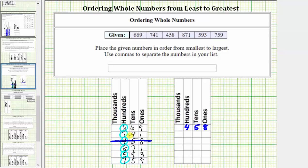Now we'll find the smallest remaining value by comparing the values in the hundreds place value. Notice how five is the smallest remaining value in the hundreds place value, which means 593 is the least or smallest remaining value, and therefore 593 is next in our list.